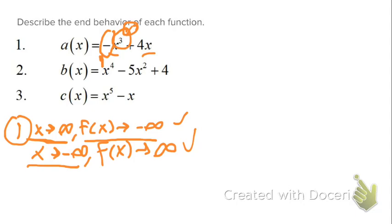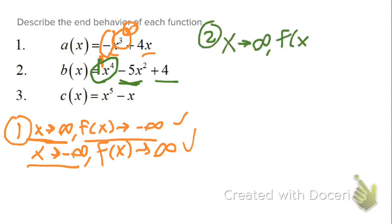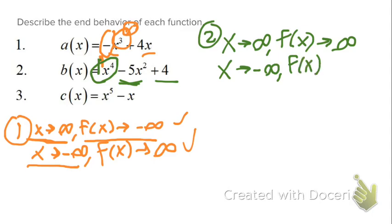In example two, we have an even degree function, but the first thing we look at is the leading coefficient. It's not always the first term — like if this was negative 5x to the fifth, then the leading coefficient would be negative 5. But since it's negative 5x squared and a constant of 4, the leading coefficient is the number in front of x to the fourth, which is 1. So in example two, as x approaches infinity, because of the leading coefficient, f of x also approaches infinity. Since the degree is even — the highest exponent of a variable is 4, which is even — it's going to go in the same direction on the left.